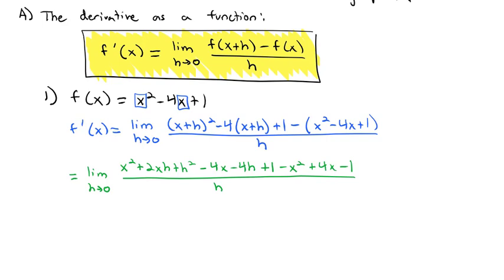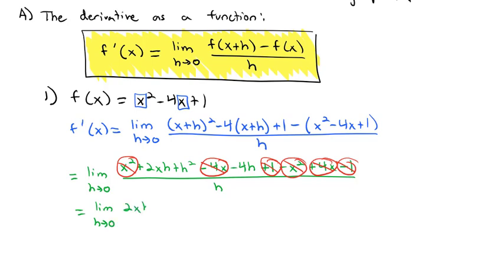This is as ugly as it gets, because many things cancel. x squared and negative x squared go to 0. Negative 4x and positive 4x go to 0. Positive 1 and negative 1 go to 0. When we clean up, we just have the limit as h goes to 0 of 2xh plus h squared minus 4h, all over h.